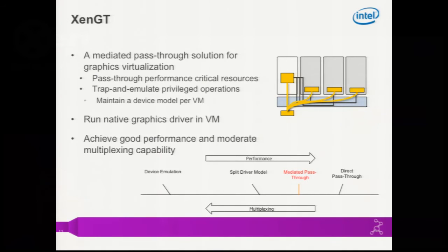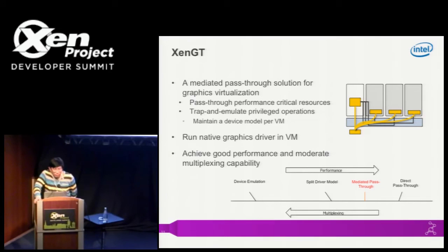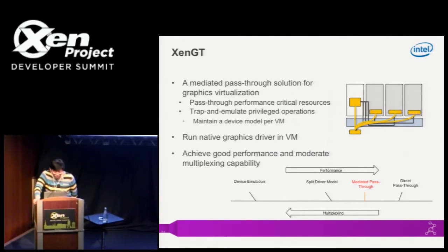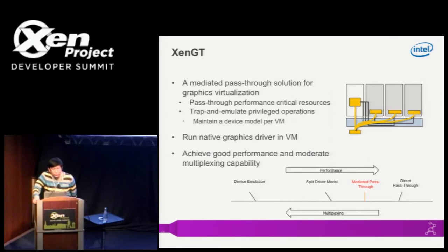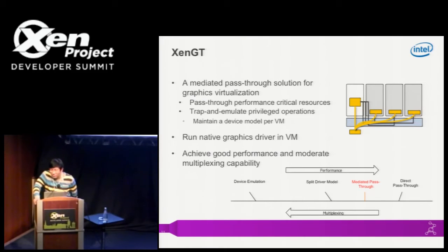Let's talk about our XenGT architecture. I want to emphasize that in XenGT we are proposing a mediated passthrough approach. Looking at the IO emulation spectrum: on the left side you have device emulation with the most multiplexing capability but worst performance, while on the right side you have direct passthrough. Our solution is somewhere in between — we pass through the performance-critical resources, while for others we provide mediation. By doing this, we achieve quite good performance compared with native, and we also provide moderate multiplexing.